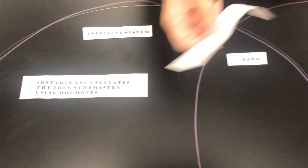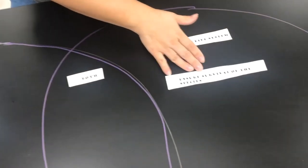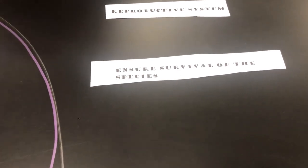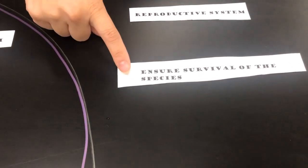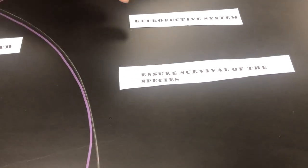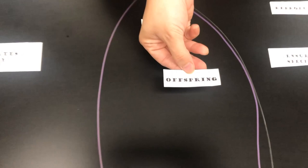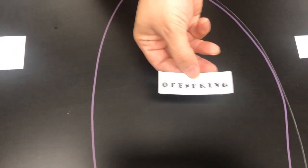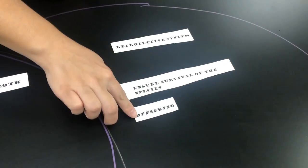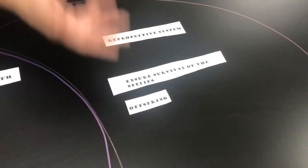We can say though that the reproductive system ensures the survival of the species. The endocrine system does not guarantee the survival of the species, but the reproductive system does. The word offspring, remember when we covered that, was in the reproductive system—offspring are like babies.